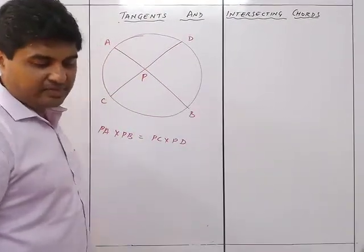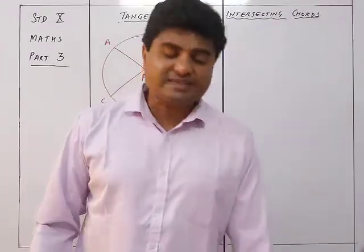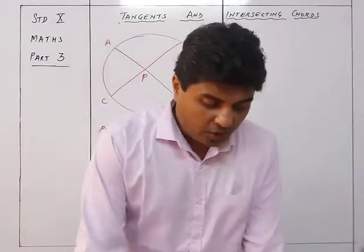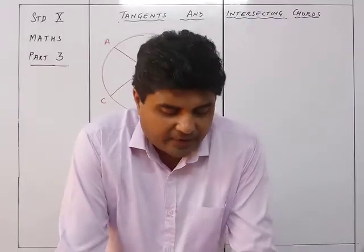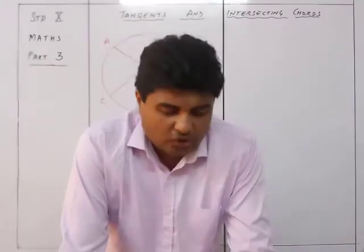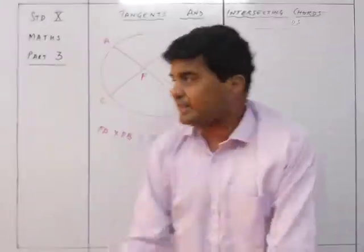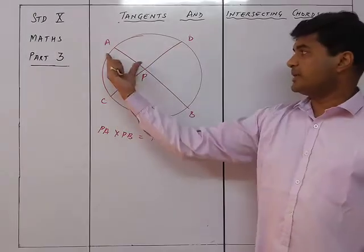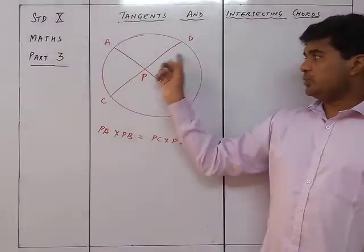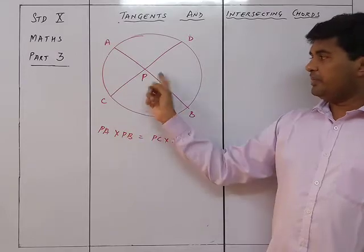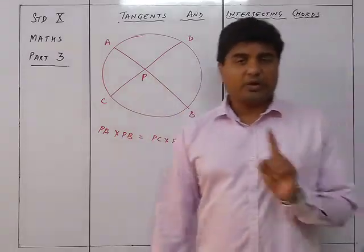The theorem states: if two chords of a circle intersect internally or externally, then the product of the lengths of their segments is equal. So PA × PB = PC × PD — that is what we are going to prove.